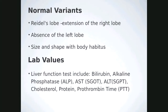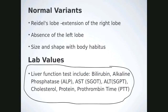Normal variants include Riedel's lobe — an extension of the right lobe below the inferior border of the right kidney — and an absent left lobe. Size and shape vary with body habitus. Be familiar with the lab values associated with the liver, as they provide clues to what we're looking for.